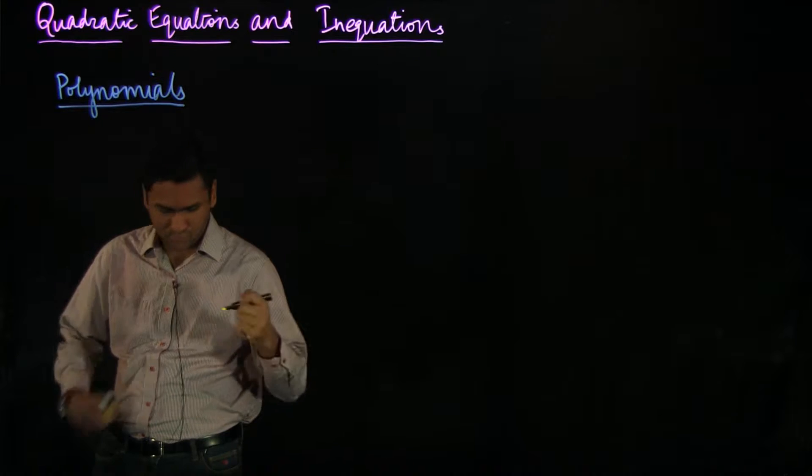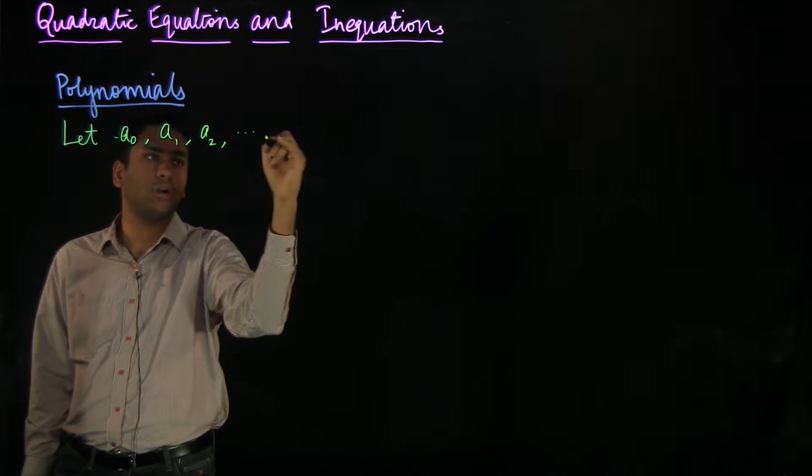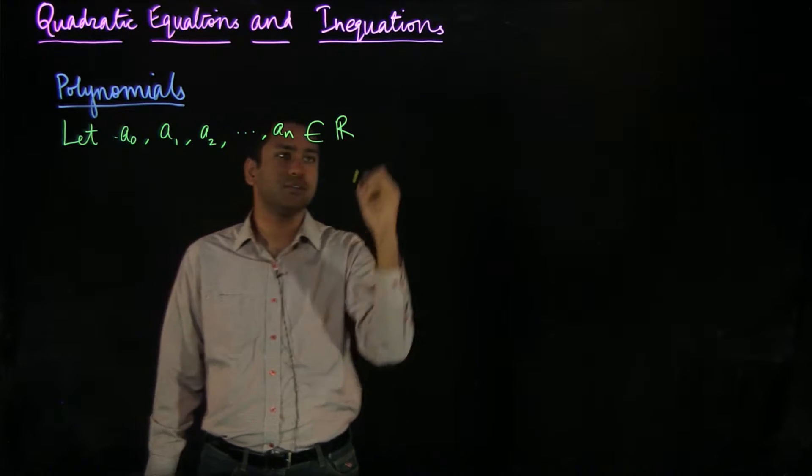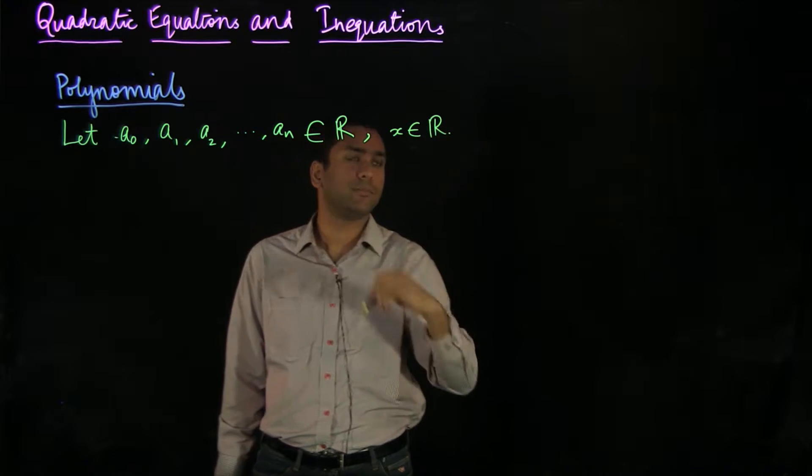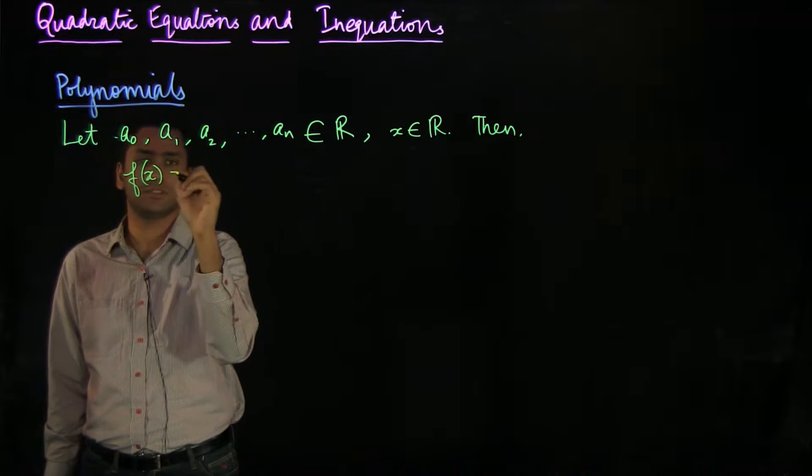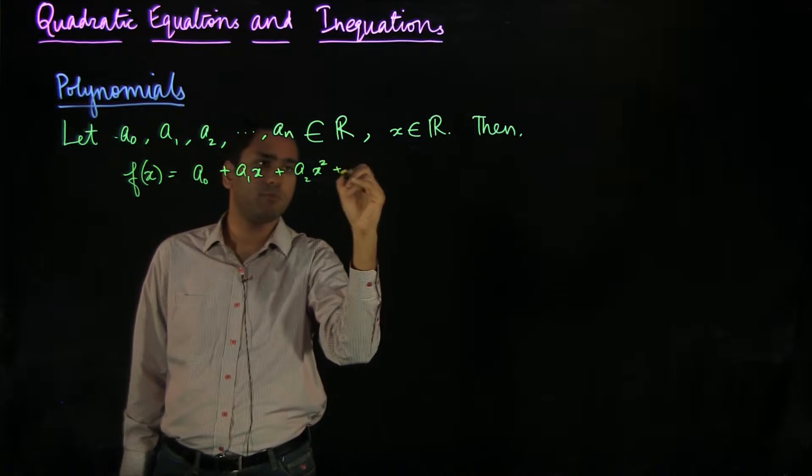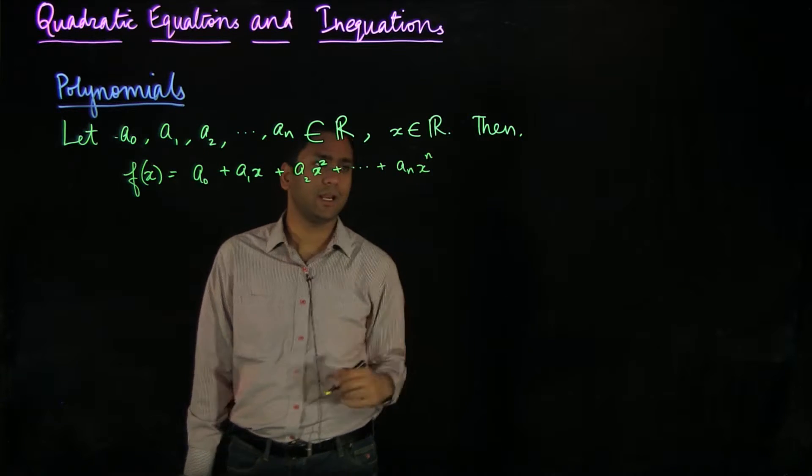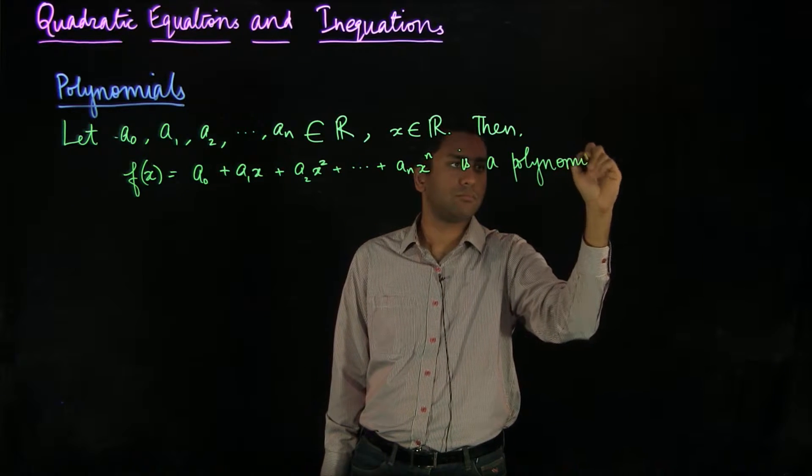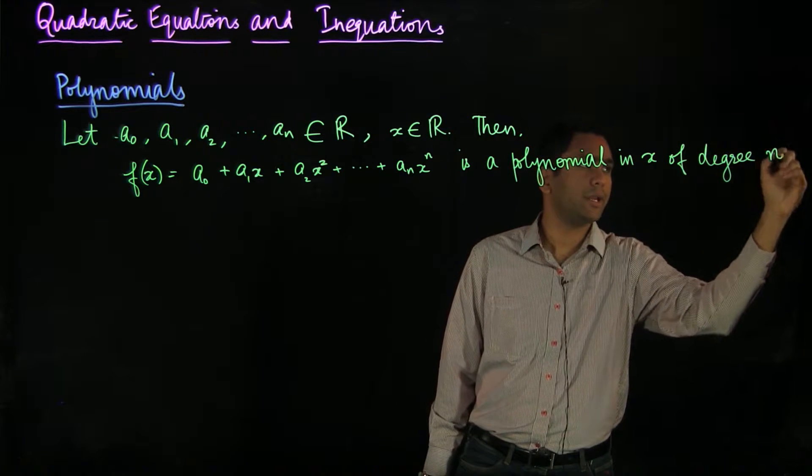Let a0, a1, a2 and so on up to an be n or n plus 1 real numbers and let x be another real number. Then, f(x) equals a0 plus a1 times x plus a2 times x squared up to an times x to the power n is a polynomial in x of degree n.